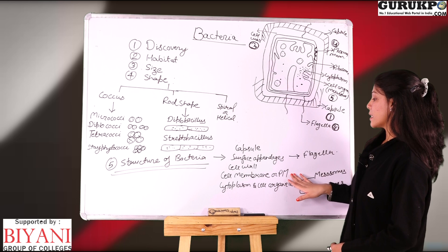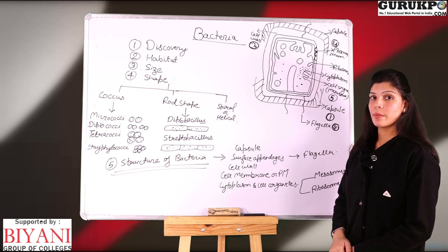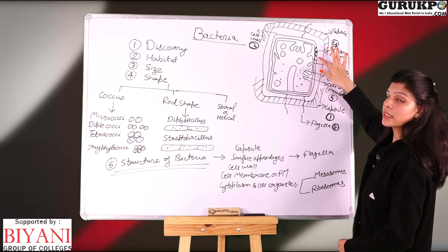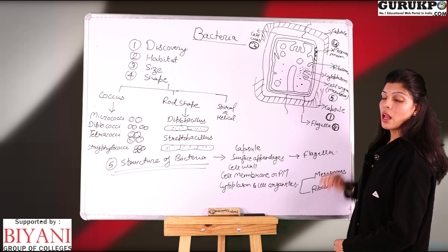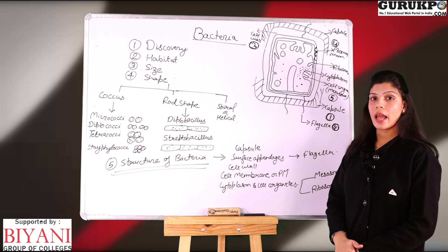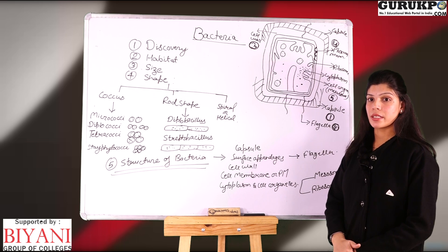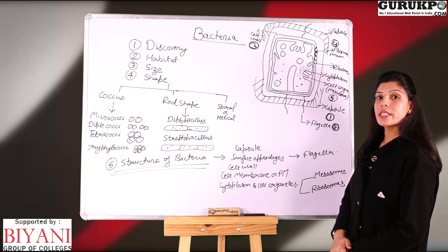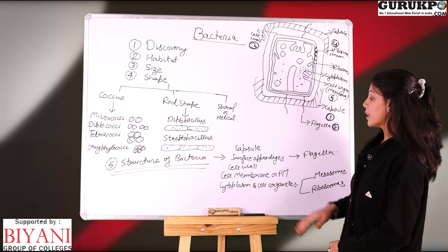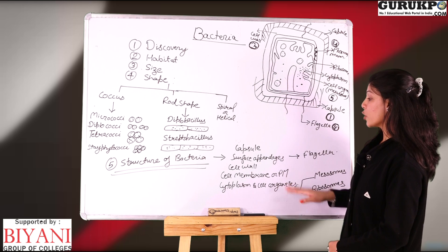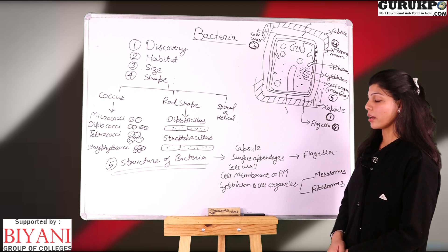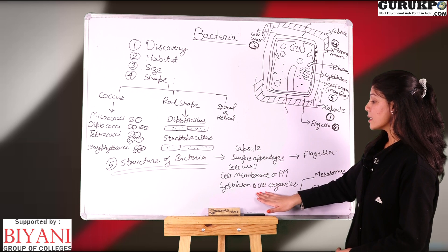Fourth category is the cell membrane or plasma membrane. The plasma membrane is present just inside the cell wall. The major components of plasma membrane are proteins and lipids. The protein molecules are embedded in phospholipid layers, so the structure of the plasma membrane resembles a fluid mosaic model.